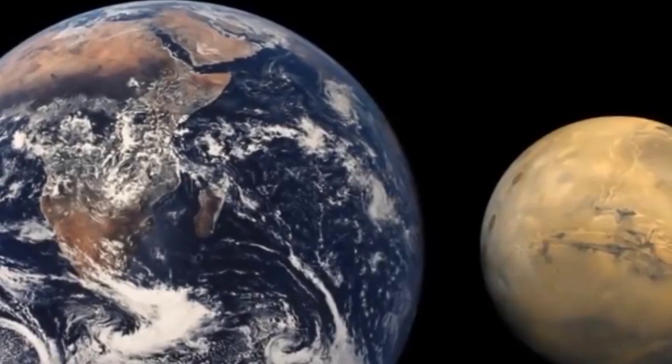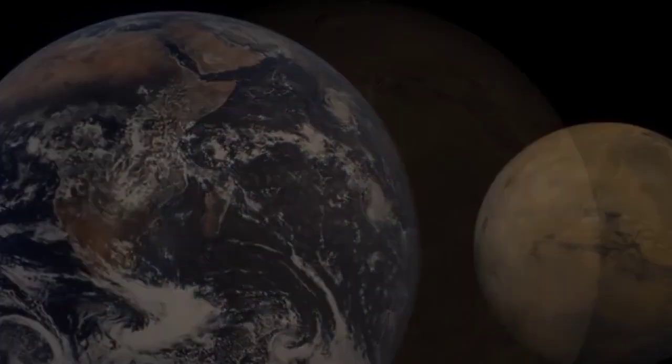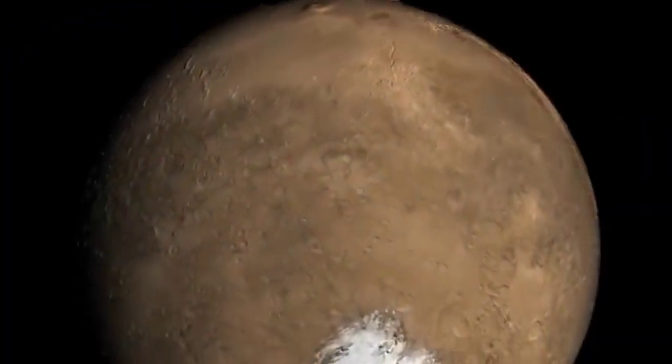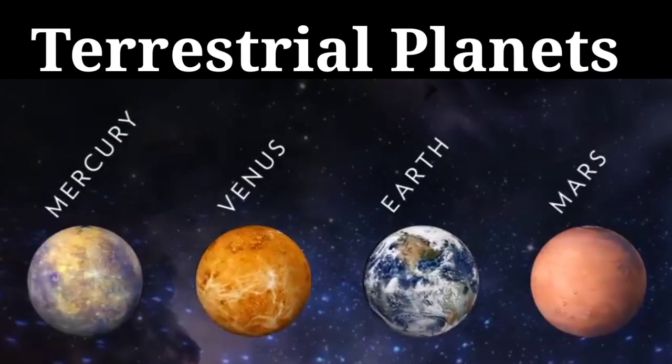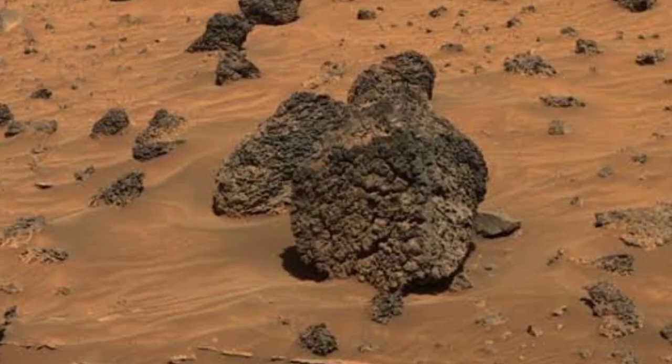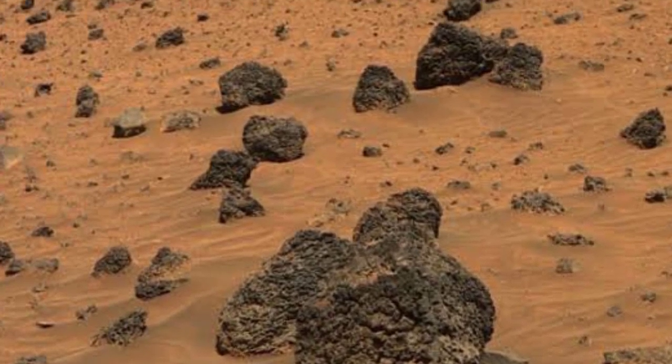They believe that people could live there with some special equipments. These all four planets are known as terrestrial planets, because they have solid rocky surfaces.